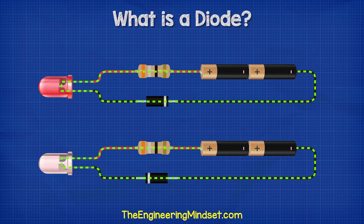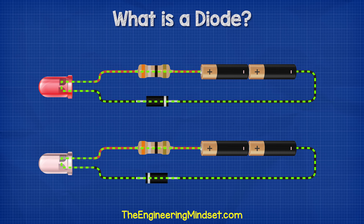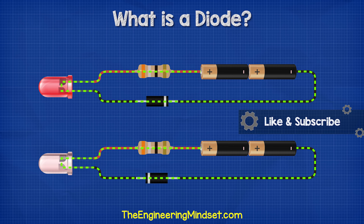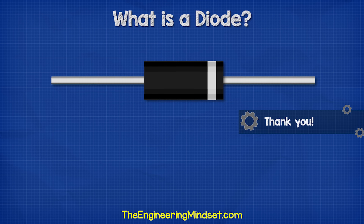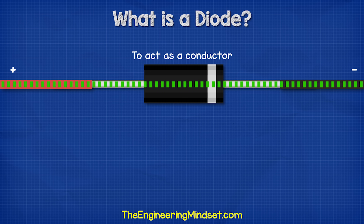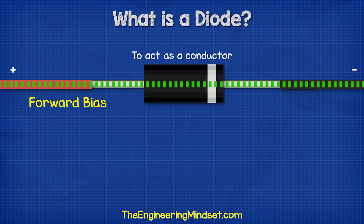So if we connect a diode into a simple LED circuit like this one, we see that the LED will only turn on when the diode is installed the correct way, and that's because it allows current to flow in only one direction. So depending on which way the diode is installed, it will act as either a conductor or an insulator. In order for the diode to act as a conductor, the stripe end is connected to the negative and the black end is connected to the positive. This allows current to flow — we call this the forward bias.